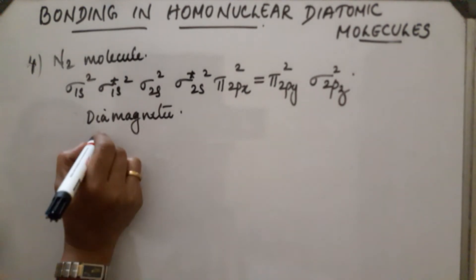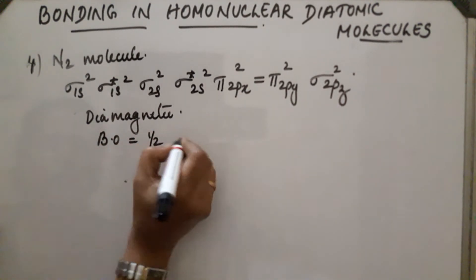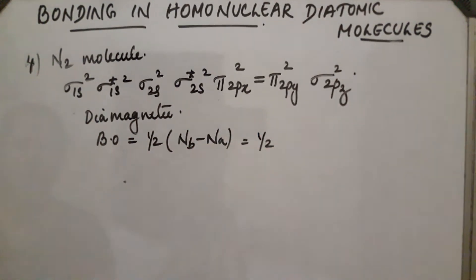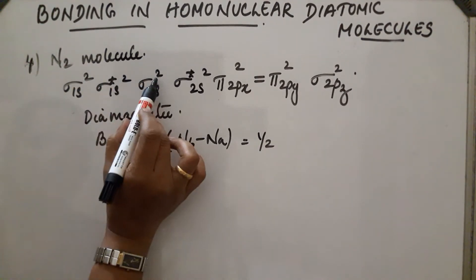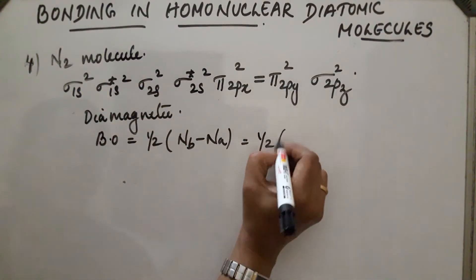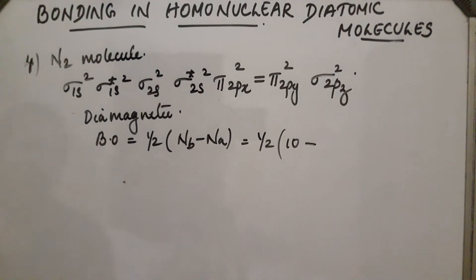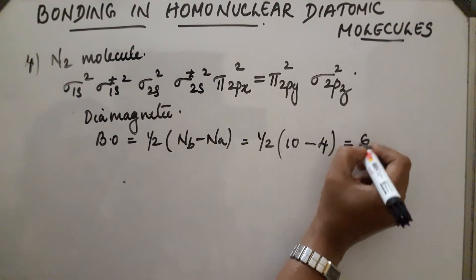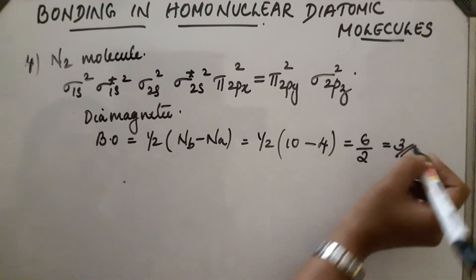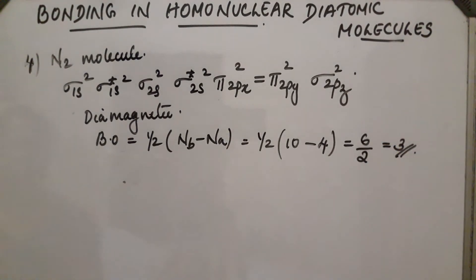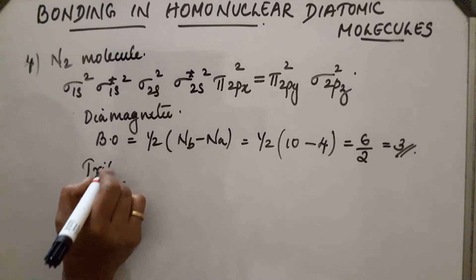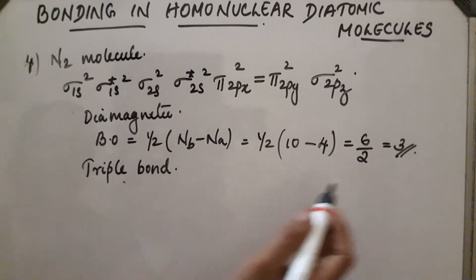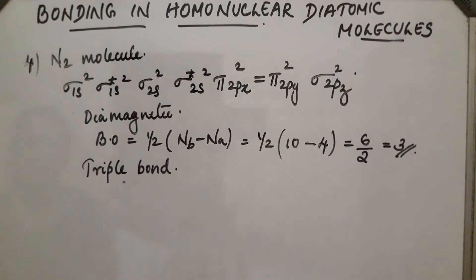We can calculate the bond order for N₂: bond order = 1/2 into (Nb minus Na). Bonding molecular orbitals contain 10 electrons; antibonding molecular orbitals contain 4 electrons. So bond order = 1/2 into (10 minus 4) = 6/2 = 3. This means N₂ has a triple bond — N≡N. It contains a triple bond and is diamagnetic in nature.